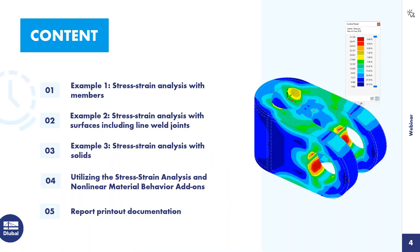Over the next hour, we'll begin with our first example — a stress-strain analysis with member elements, or 1D elements, in RFEM. We'll then move on to a stress-strain analysis with surfaces, or 2D elements, including a new feature in RFEM 6: line weld joints. Example 3 will be a stress-strain analysis with a solid, essentially a 3D element. We'll be utilizing the stress-strain analysis add-on as well as the nonlinear material behavior add-on for the second example. Finally, we'll touch on report printout documentation at the end.